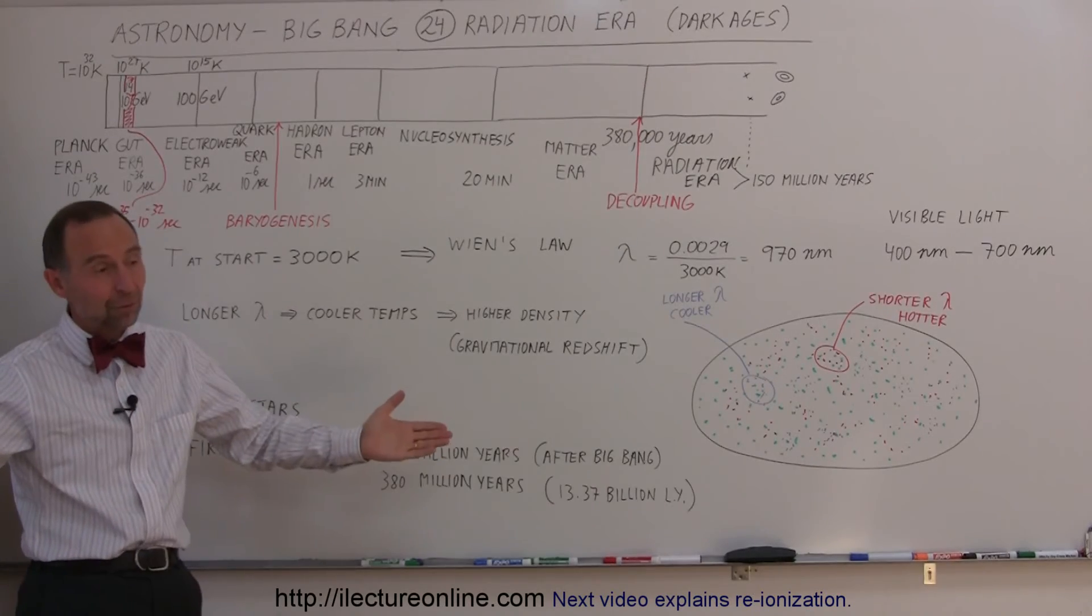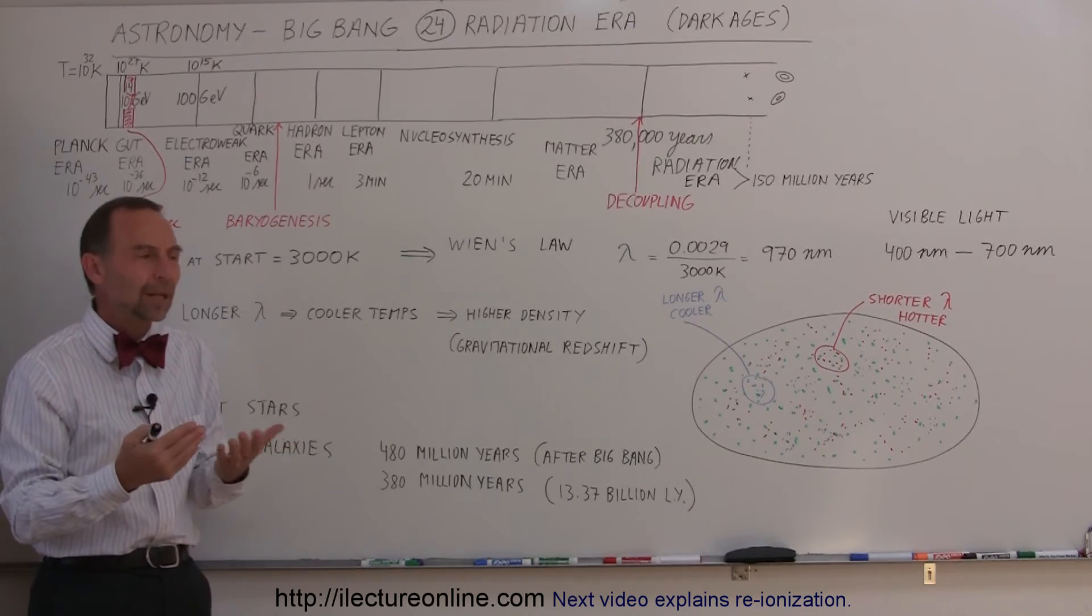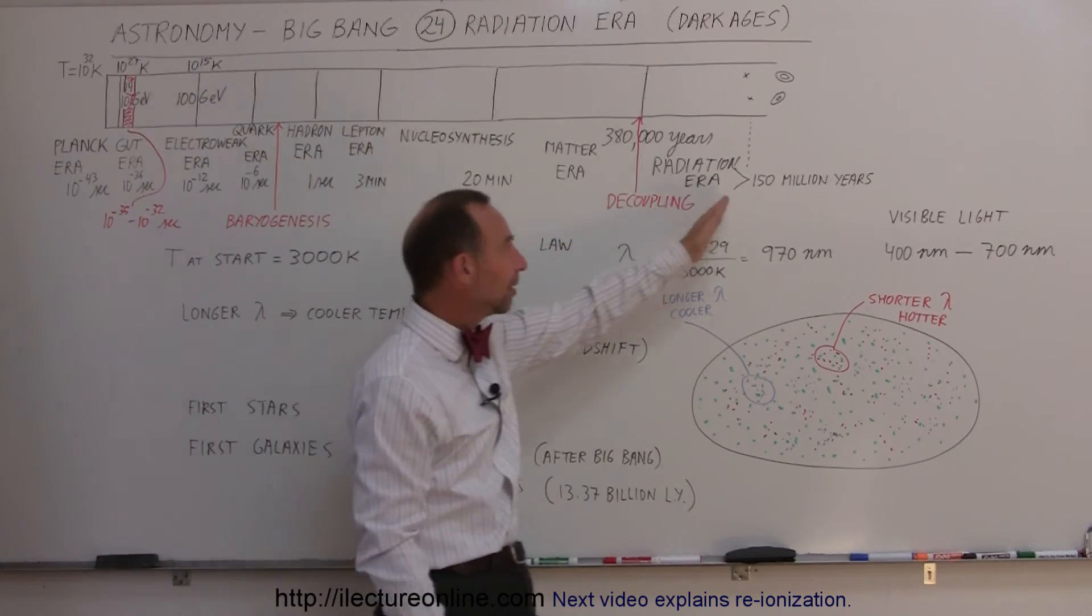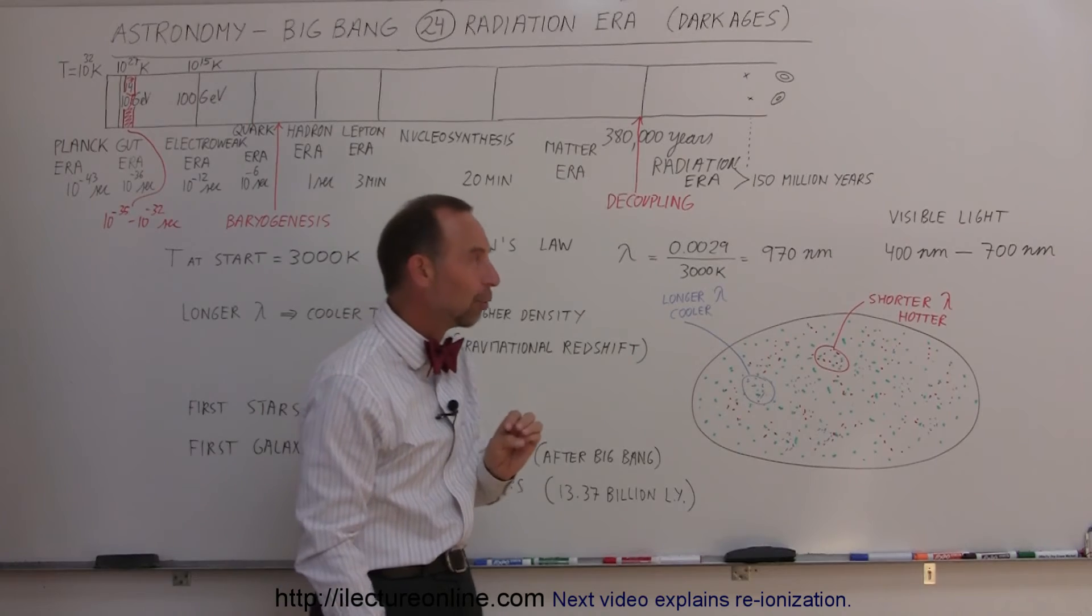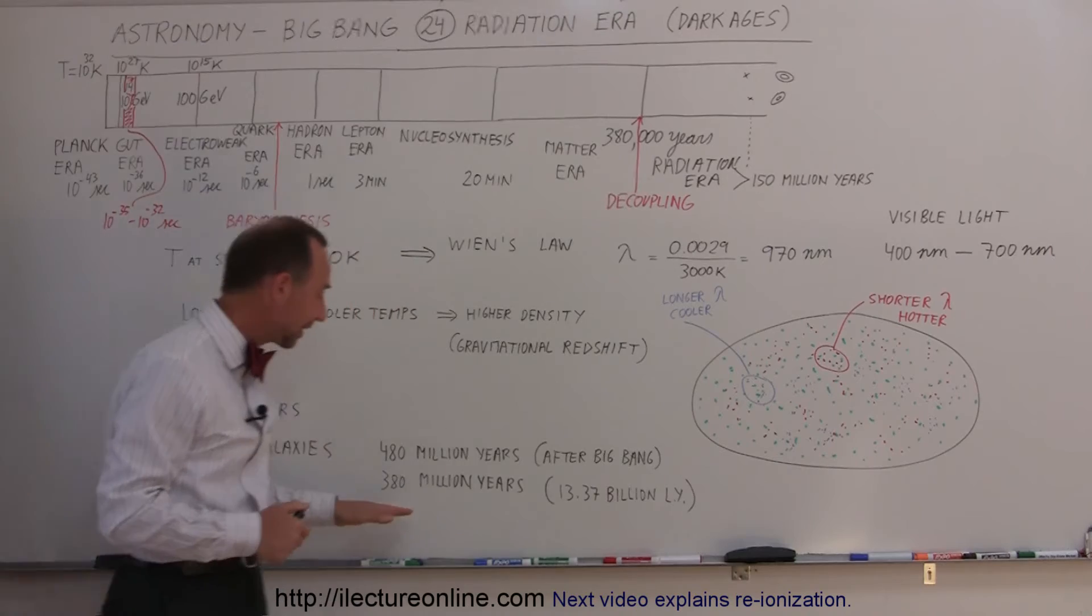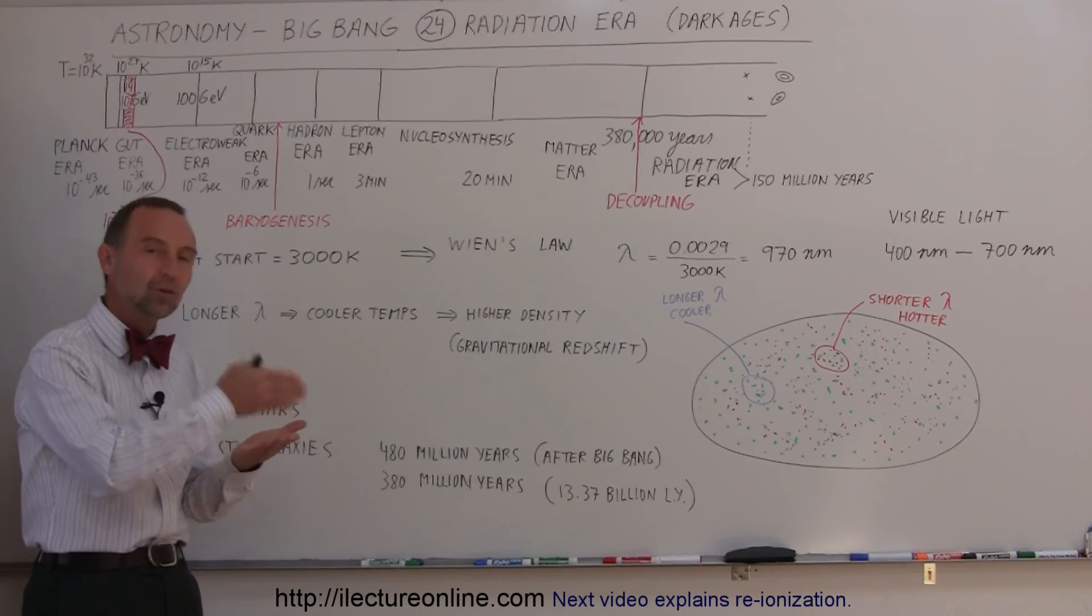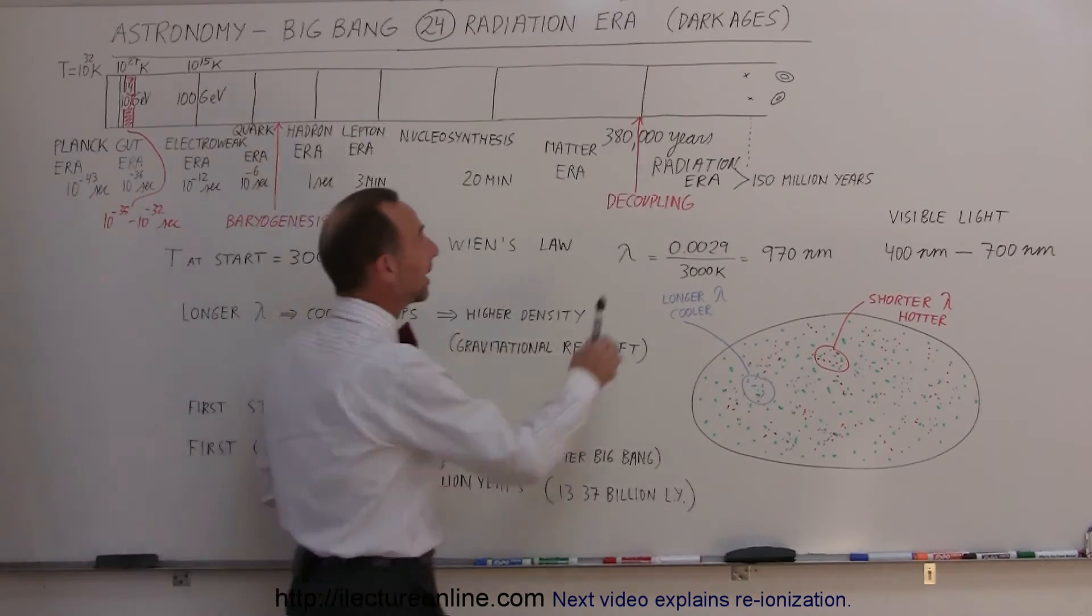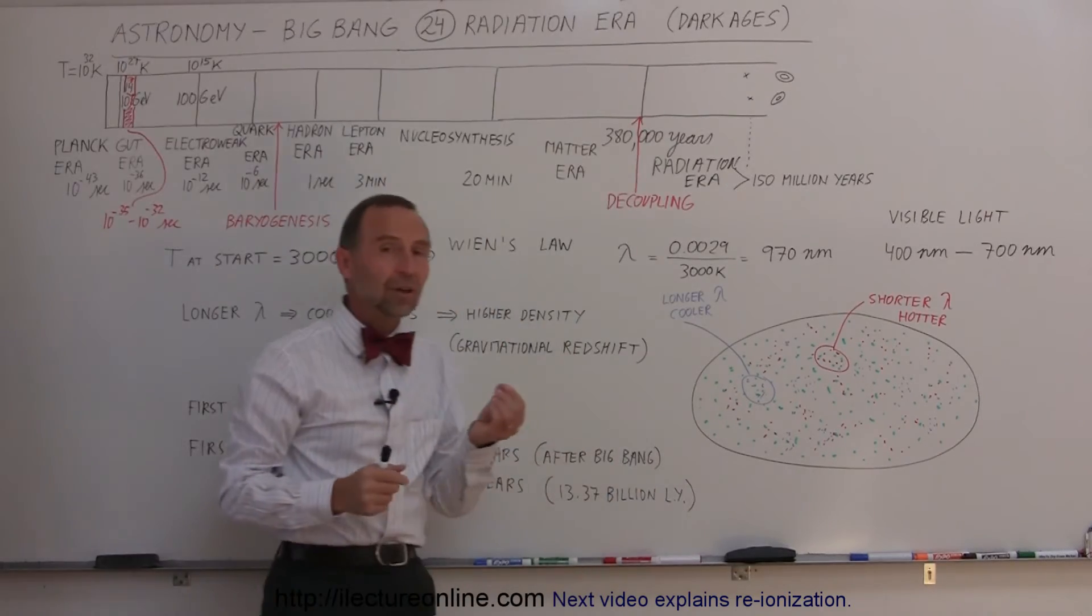When did the first stars begin to form? We believe that after decoupling, probably about 150 million years went by before the first stars began to form. We think it's somewhere between 150 and 500 million years. Since we've already found galaxies less old than that, we know stars must have formed sooner, but not sooner than 150 million years.